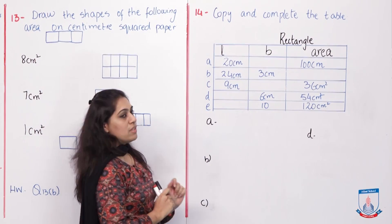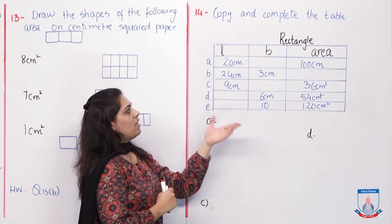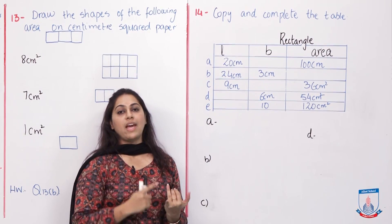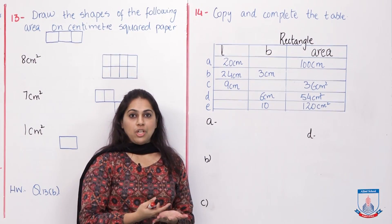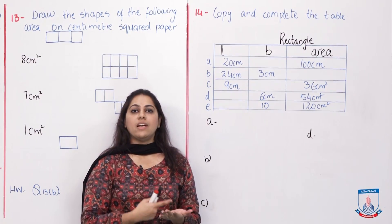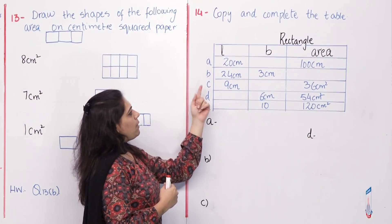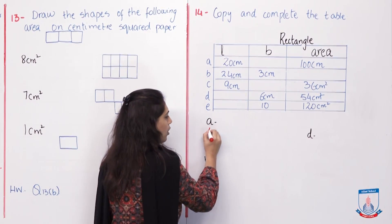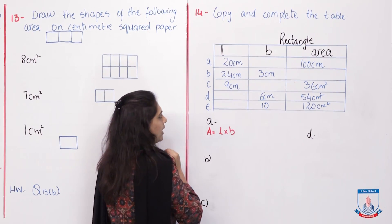Our first question: we are given area. Obviously, we should have length and breadth. Please recall the formula of area. Area is length multiplied by breadth. In this table, what have we been given? Let's write that formula: length into breadth. Which things are given? Area is given, which is 100 cm. Length is also given, which is 20 cm. Do we have breadth? No, so I am going to just write B.